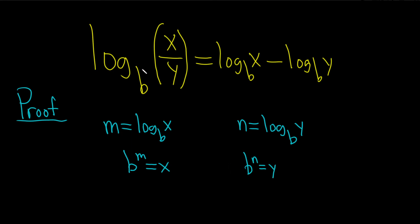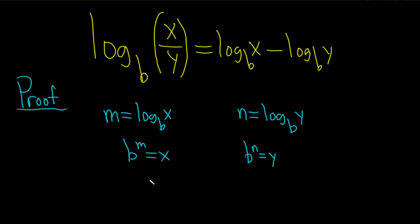We're trying to figure out what is the log base b of x over y, so now let's go ahead and divide x over y. Well, that would just be b to the m over b to the n. And then we can use properties of exponents, which say we subtract, so this is b to the m minus n.